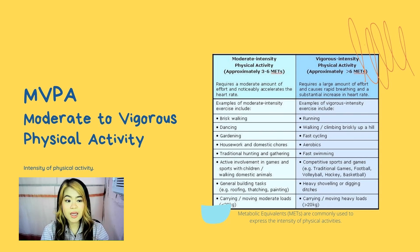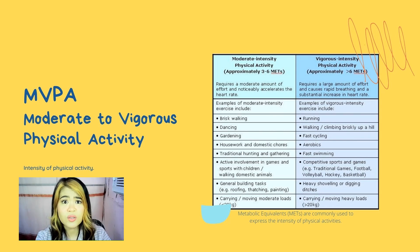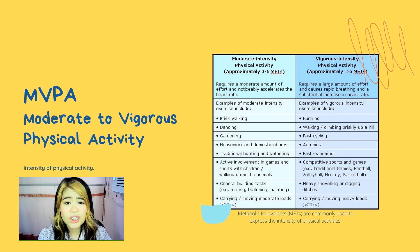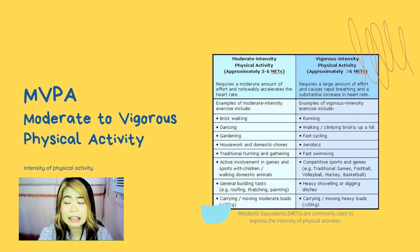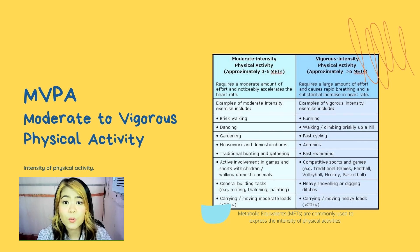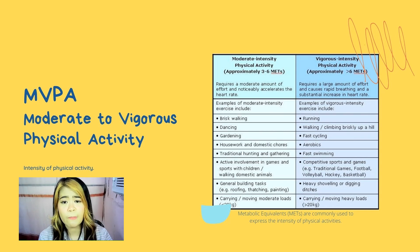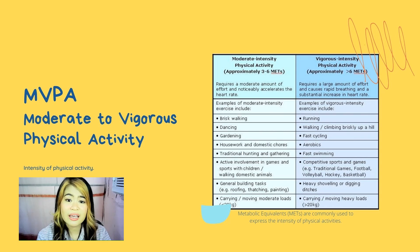Let's talk about MVPA or moderate to vigorous physical activity. What is MVPA? This is also known as the intensity of physical activity. Intensity refers to the rate at which the activity is being performed or the magnitude of the effort required to perform an activity or exercise — how hard a person works to do the activity. The intensity of different forms of physical activity varies between people and depends on an individual's previous exercise experience and their relative level of fitness.